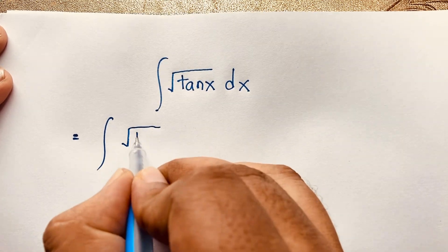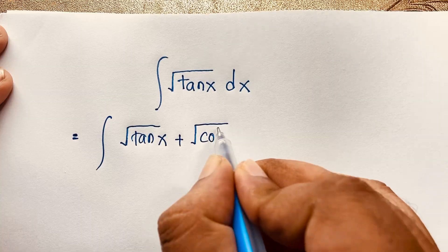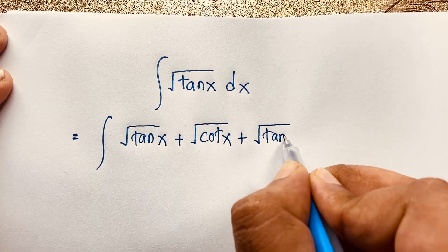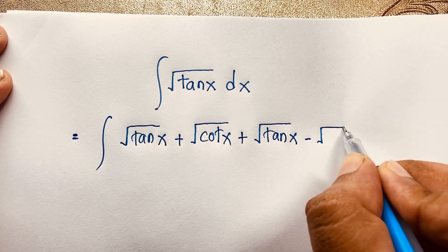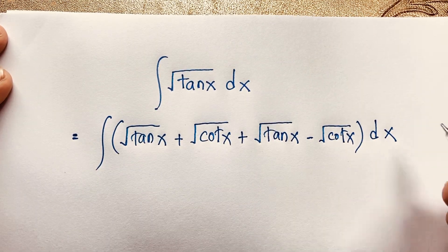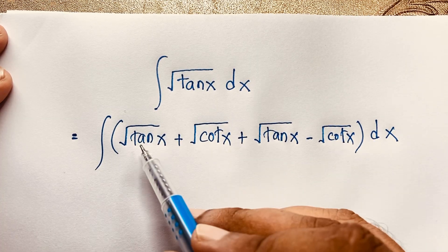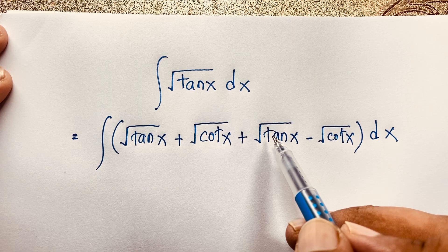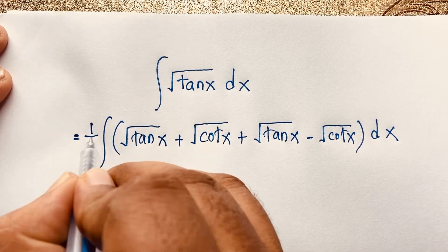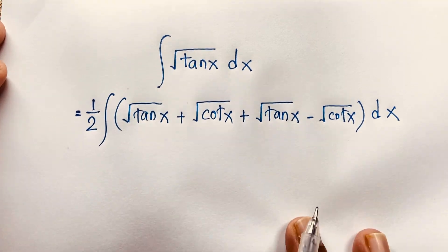Here is the integral of square root of tan x. I take square root of tan x, then I add square root of cot x, then I use a plus sign: square root of tan x plus square root of cot x. Then I subtract square root of cot x. Now cot x and cot x cancel out, but square root tan x plus square root tan x gives 2 square root tan x.